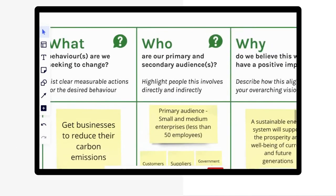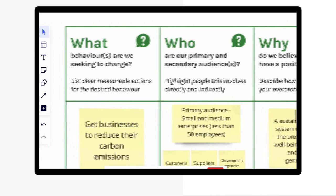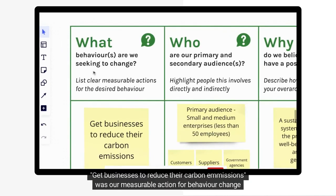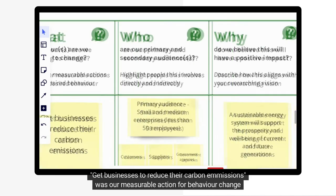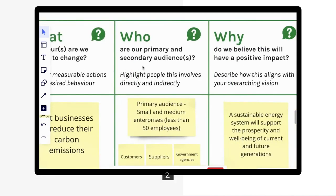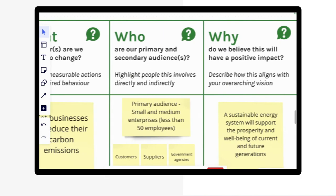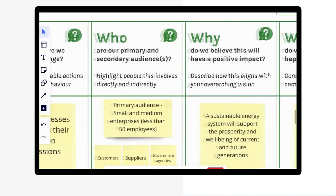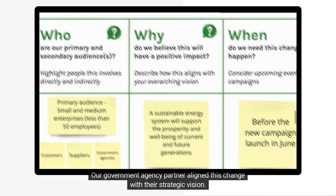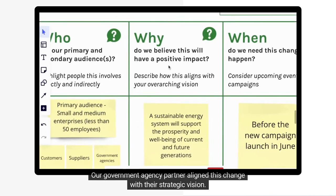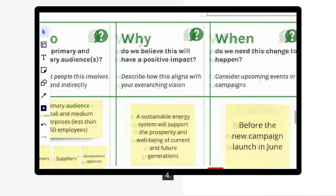We asked: 1. What? Getting businesses to reduce their carbon emissions was our measurable action for behavior change. 2. Who? The primary audience was small businesses in New Zealand. 3. Why? Our government agency partner aligned this change with their strategic vision.